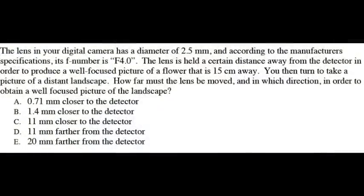So first let's carefully read the problem. The lens in your digital camera has a diameter of 2.5 millimeters and according to the manufacturer's specification its F-number is F 4.0. The lens is held a certain distance away from the detector in order to produce a well-focused picture of a flower that is 15 centimeters away — I'm assuming that means 15 centimeters away from the lens. You then turn to take a picture of a distant landscape. How far must the lens be moved and in which direction in order to obtain a well-focused picture of the landscape?